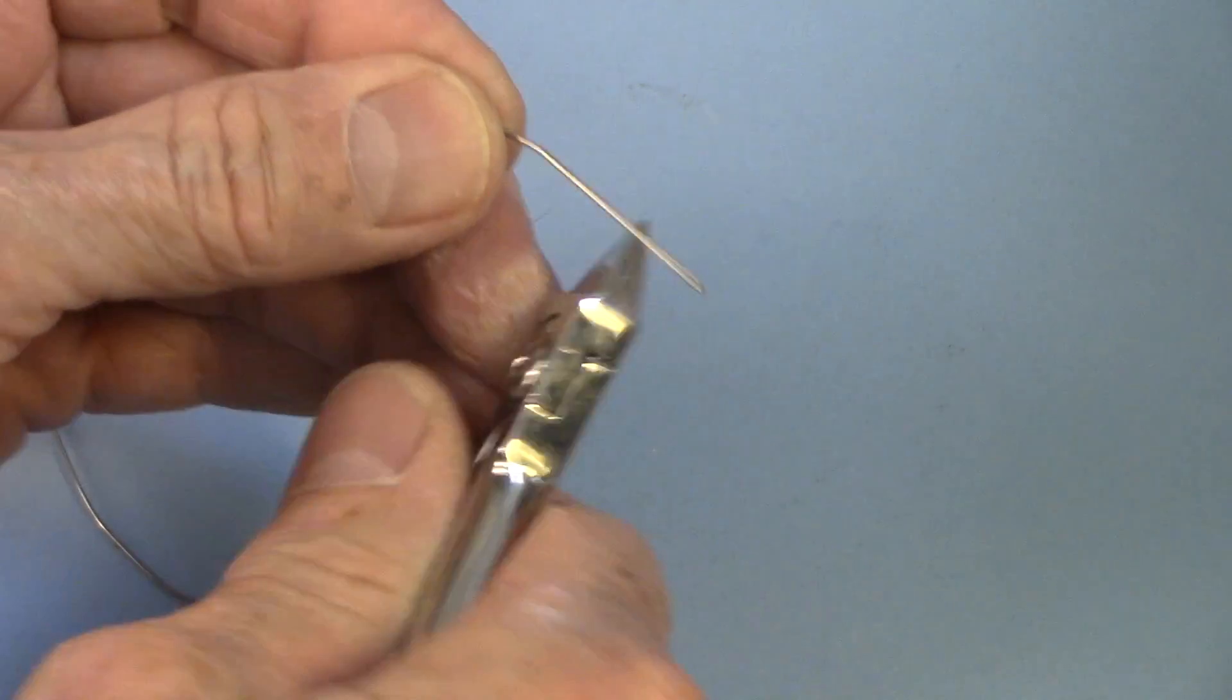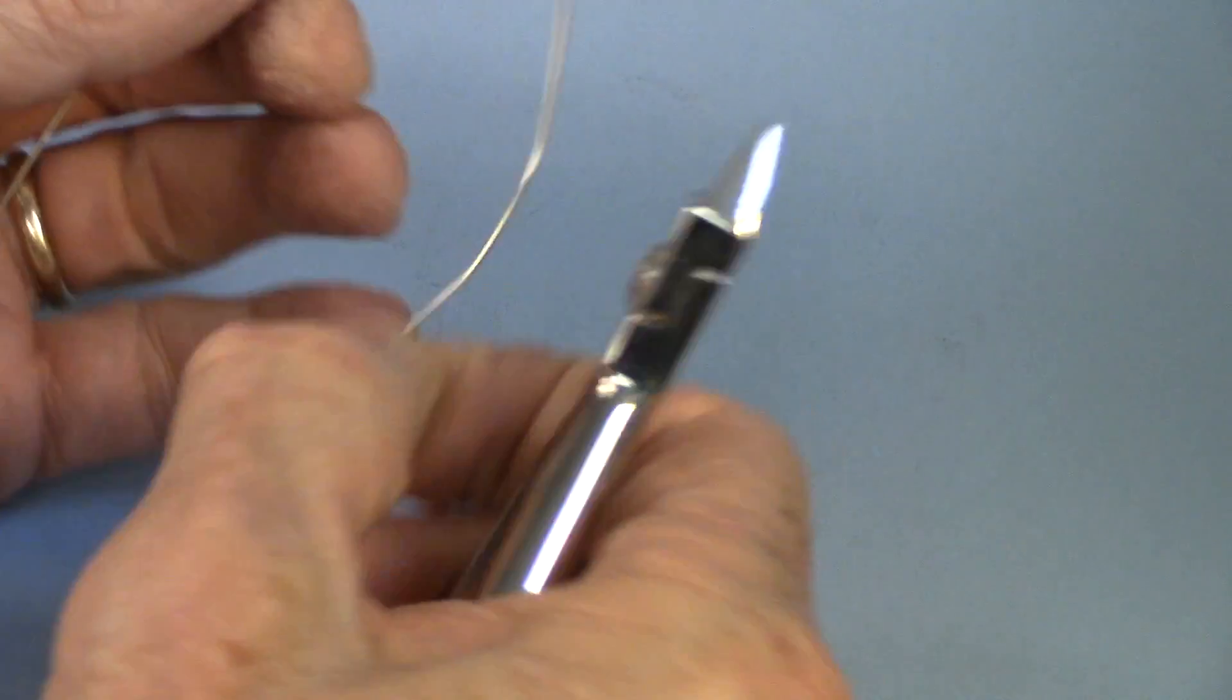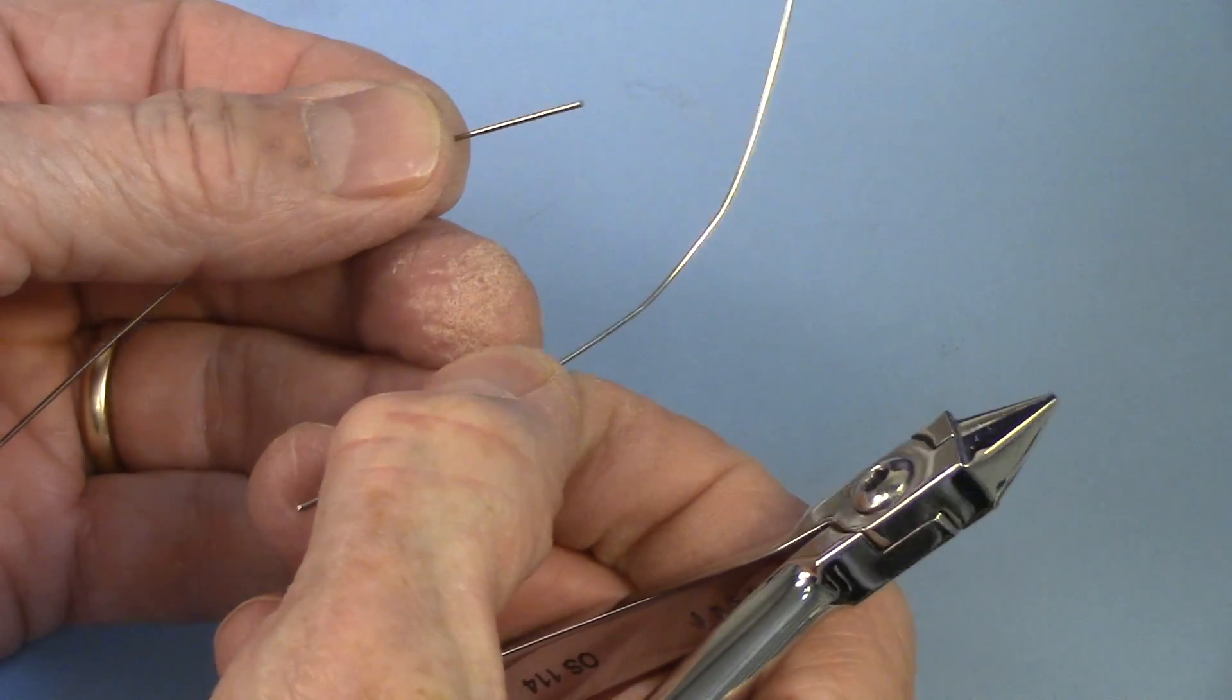So this wire doesn't have as much elasticity as this wire, even though this is a softer nickel-chromium wire. This is about as soft as the nickel-chromium wire as you can get, but it still is not as soft as the cobalt alloy wire.